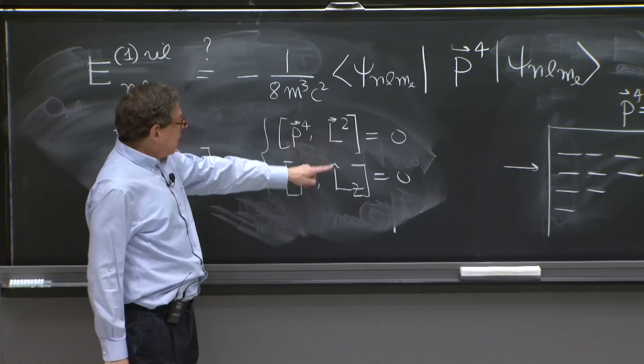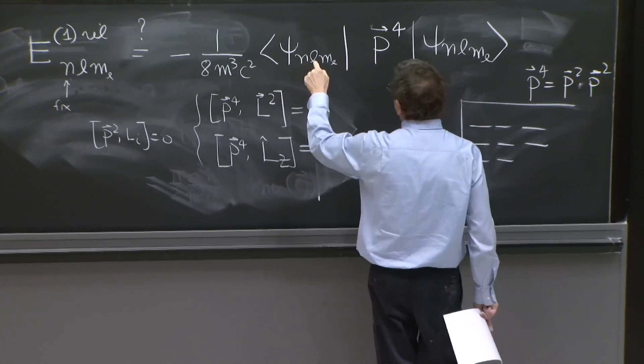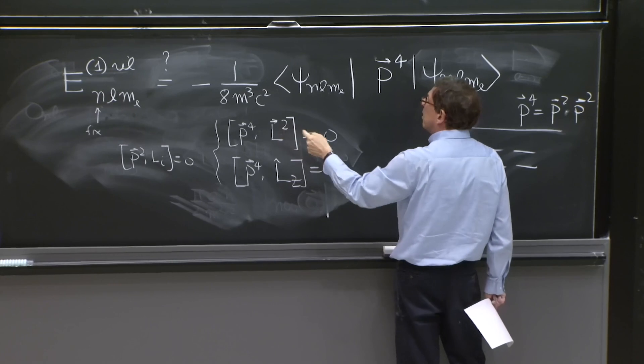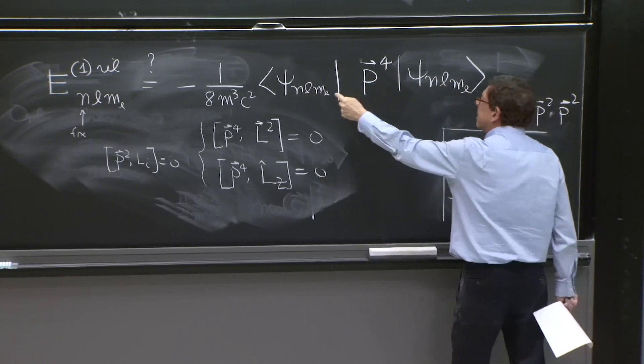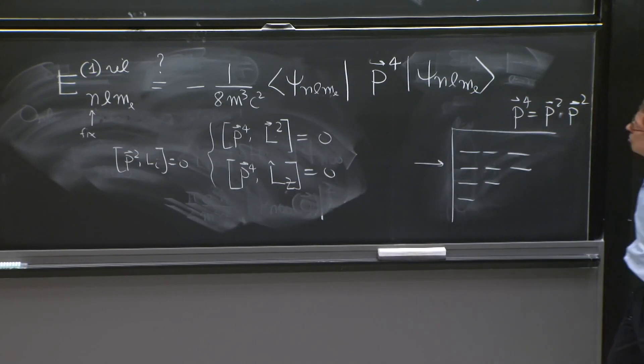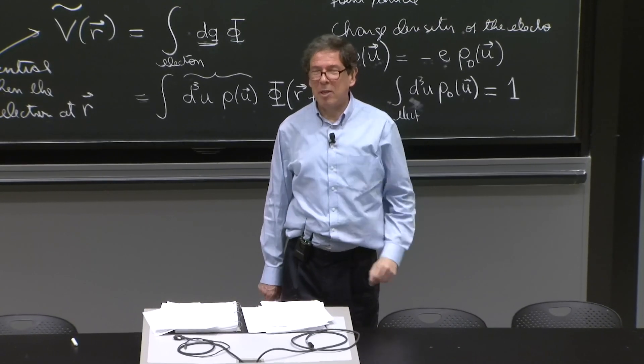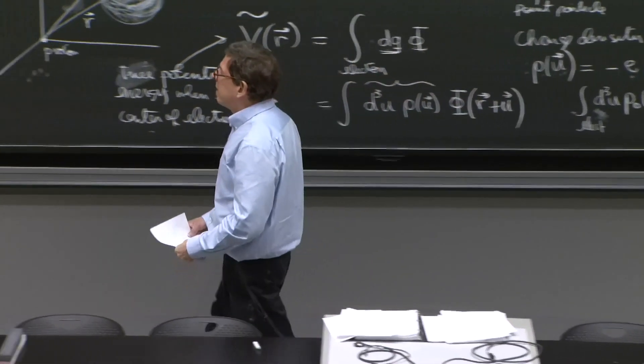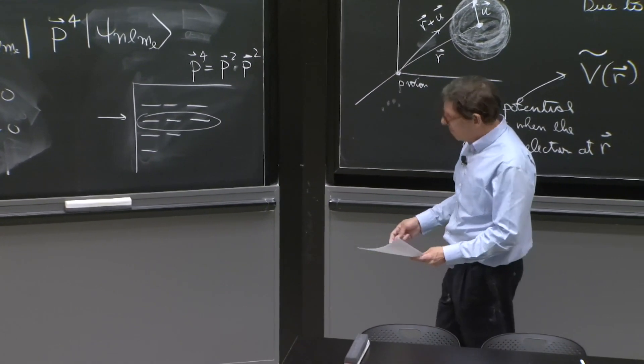But this is a Hermitian operator. And the various states, when you have fixed n, you can have different Ls. But when you have different Ls, there are different eigenvalues of L squared. So in those cases, the matrix element would vanish. When you have the same Ls but different ms, these are different eigenvalues of Lz. So the matrix element should also vanish. So this establishes rigorously that that perturbation, P to the fourth, is diagonal in that subspace. In this subspace, it's completely diagonal. Good.